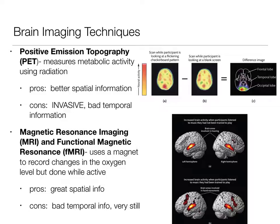Next, we're going to watch a video. The video talks about three different tasks and brain activity involved with those. Those tasks are tangentially related to this class, but mostly I'm showing this video because I want you to see the tasks and how those tasks work. The first task is going to be with an EEG cap, and the second and third tasks are going to be with fMRIs.